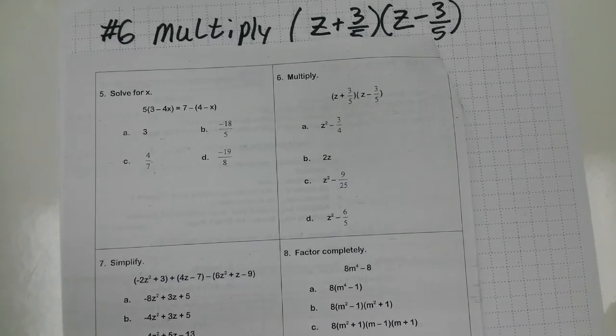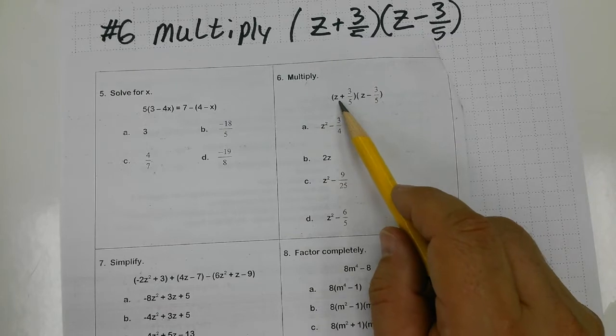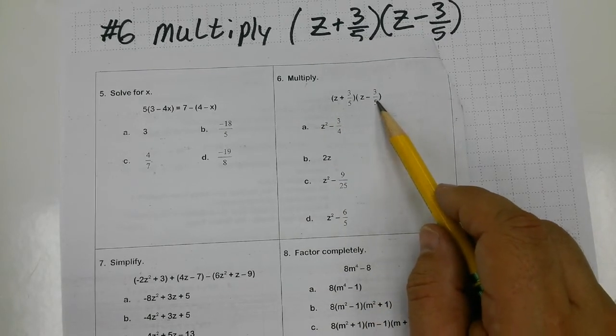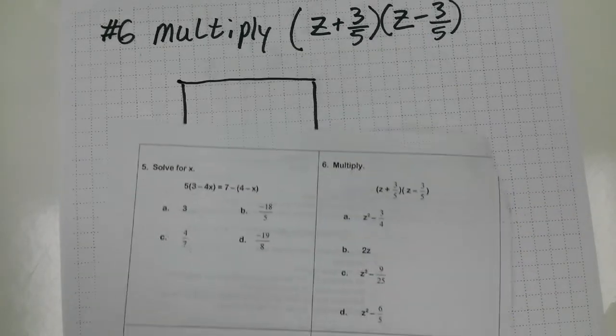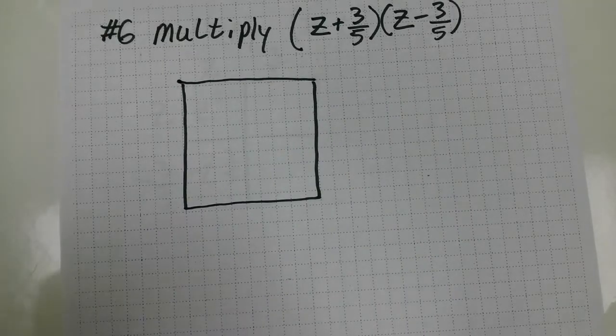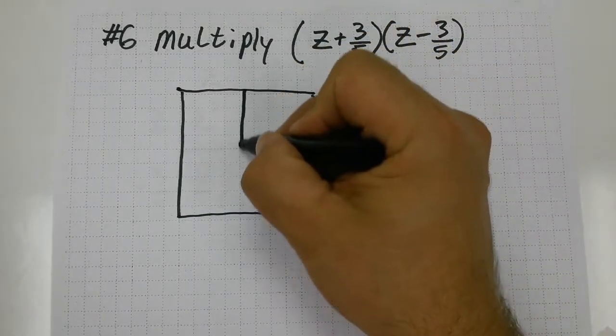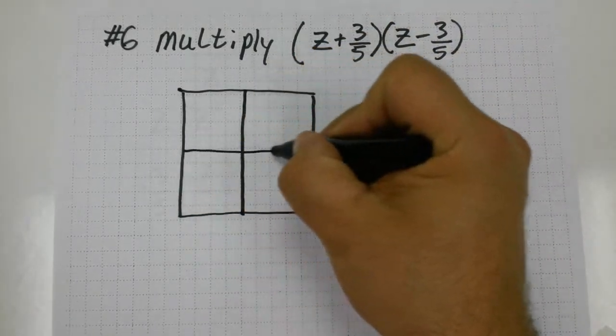For number 6 from the PERT practice test, it asked me to multiply this binomial times its conjugate, this binomial. If you know me, you know when I multiply binomials or a binomial times a trinomial, I like to set up a Punnett square. So here's my Punnett. Some people call it the box method.